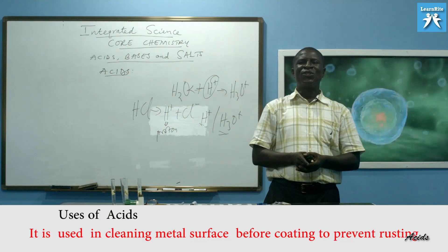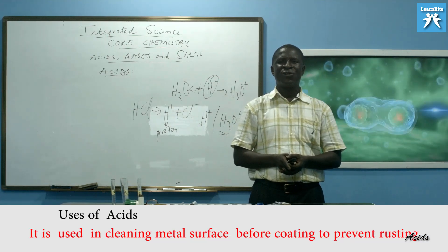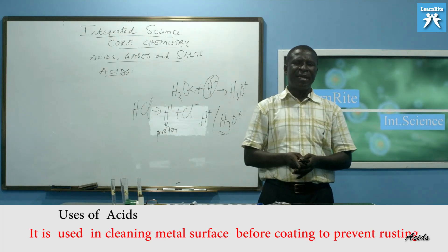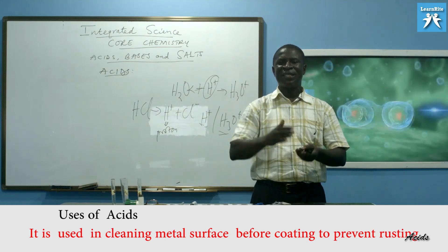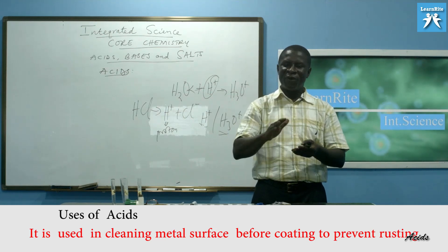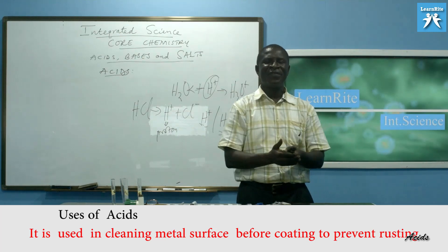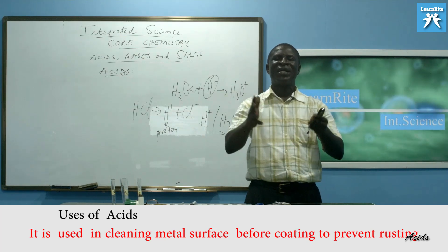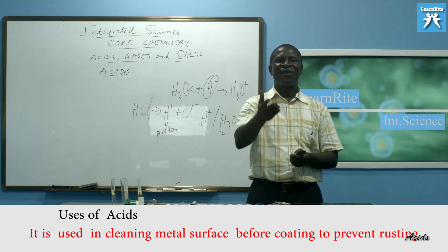Now, number three. It is used in cleaning metal surfaces before coating to prevent rusting. Normally, metals undergo rusting. So, if you don't want the metal to go rusting, you coat it. And before coating, you can use acid to clean the surfaces, to wipe up surfaces before you coat. So that the metal will stay long. It will not undergo any rusting for a long life metal.